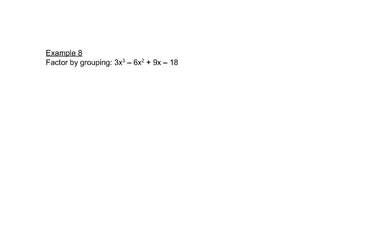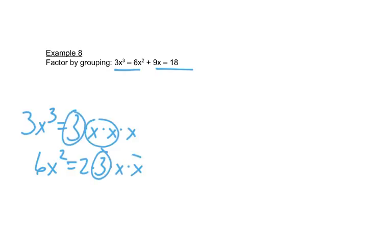Let's look at one more. Again, we're going to look at the first two and the second two. We look at 3x to the third, and that's 3 times x times x times x. 6x squared is 2 times 3 times x times x. They both have a 3 and they both have two x's. So our greatest common factor for those first two terms is 3x squared. What's left from the first piece is an x. This had a minus, so we'll use a minus, and what's left from the second piece is a 2.